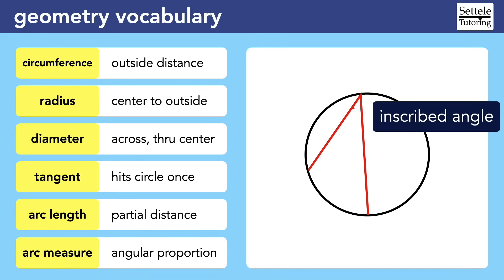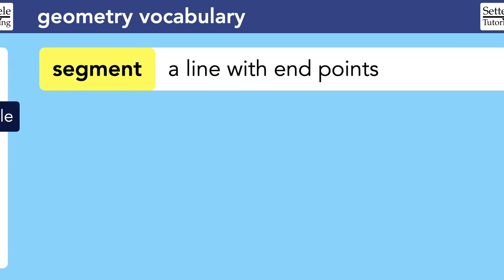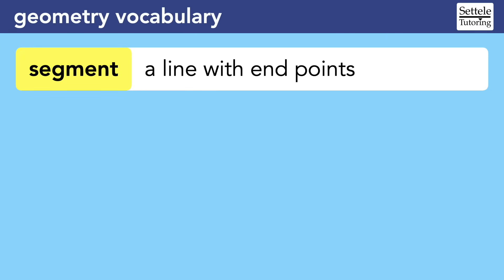Very rarely, a circle question might include an inscribed angle, which is anchored on the circle itself. Backing up a bit, let's talk more about lines.